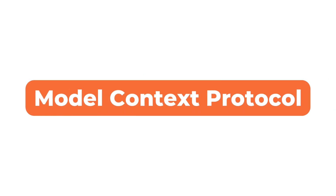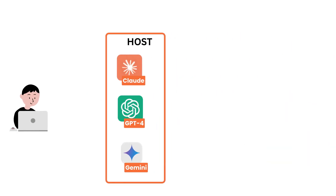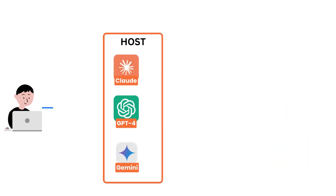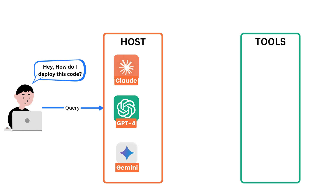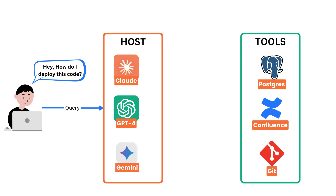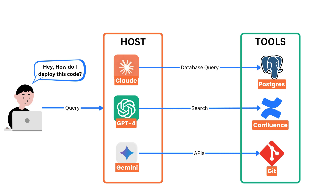Let's first understand what MCP actually is and what problem it's solving. Think of how AI assistants like ChatGPT or Claude work. If you ask them something like 'how do I deploy this code,' they don't have access to your GitHub, your database, your documents — nothing. Right now, if you want AI to fetch real-time context from a project, every AI tool has to implement its own way. Some call APIs, some query databases, some rely on vector search. It's all custom, scattered, and messy.